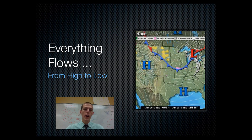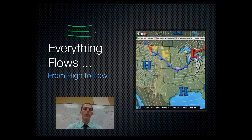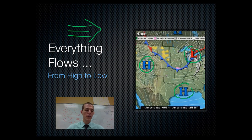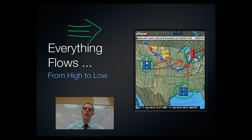Everything flows from high to low — whether we're talking about osmosis in biology, diffusion, or the wind. If you've got an area of high pressure, that air is going to want to move towards the place where there is lower pressure. Think of a bag of water: squeeze it, punch a hole in it — there's high pressure inside, so the water shoots out towards the lower pressure outside. Wind does the exact same thing. On our weather map, we've got high pressure here and here, and low pressure right there, so these air masses are going to move towards the low pressure area. You can think of it as flowing downhill — high pressure is the top of the hill. As that air mass moves, we experience that as wind.